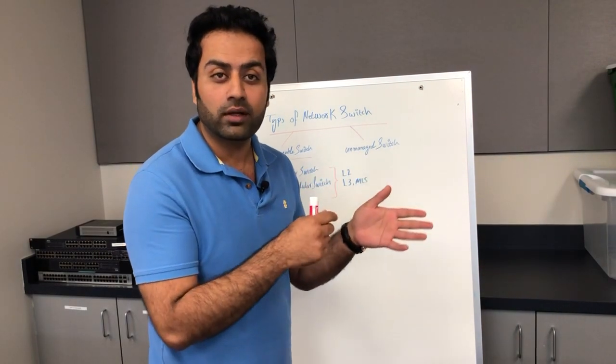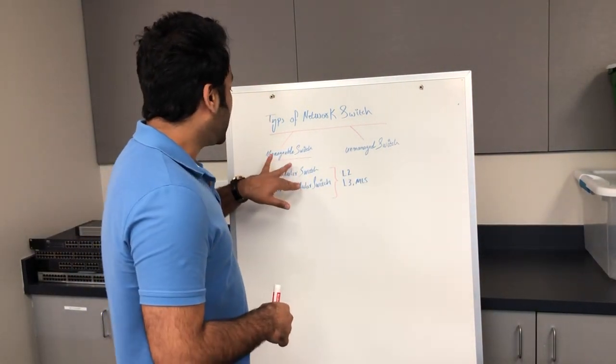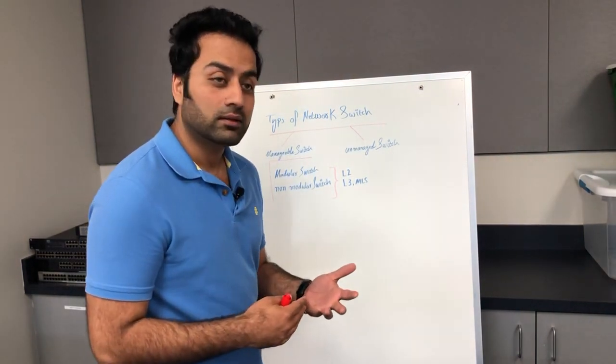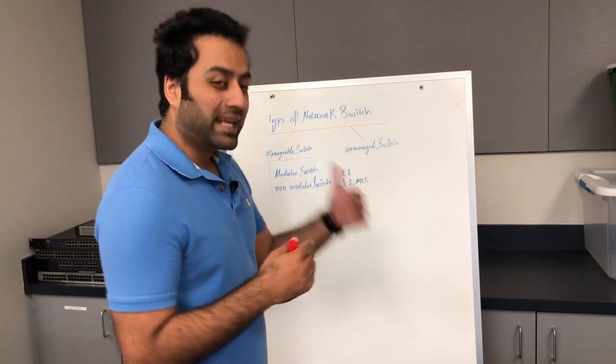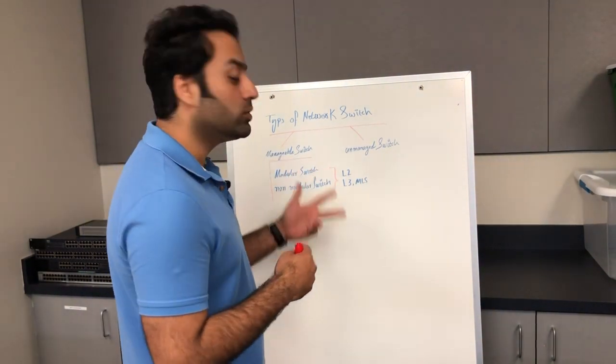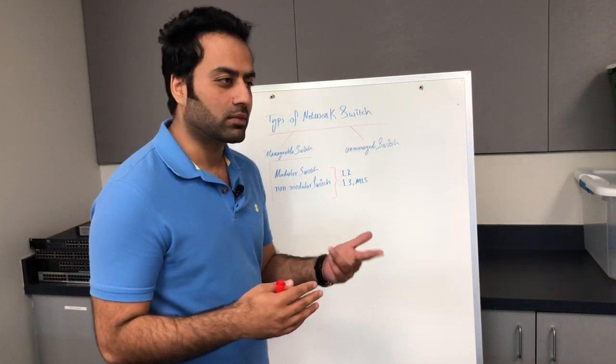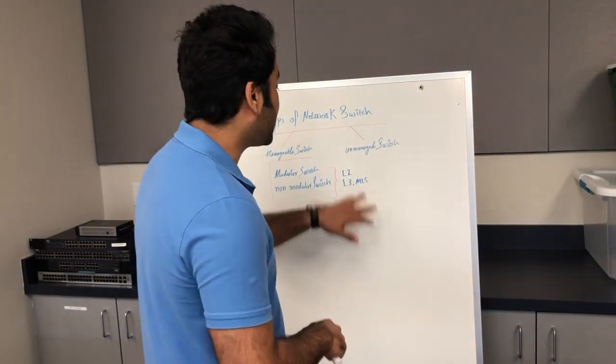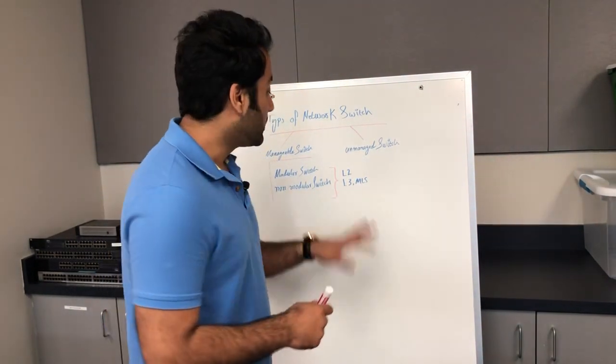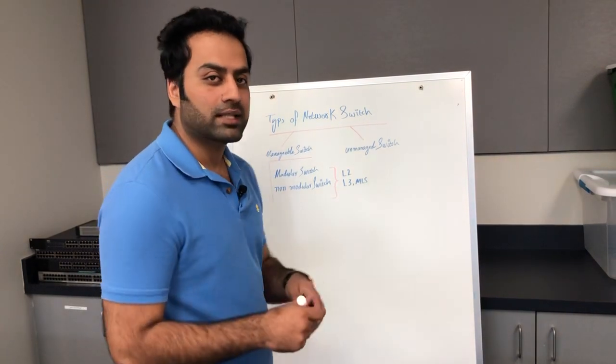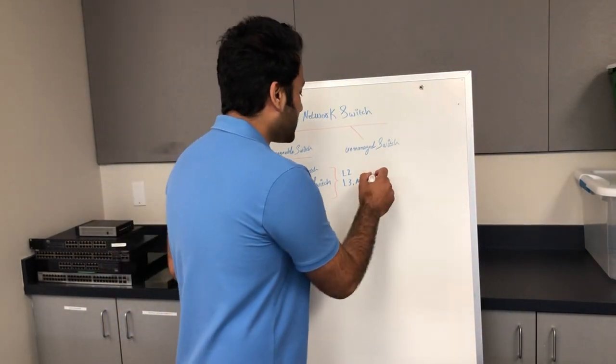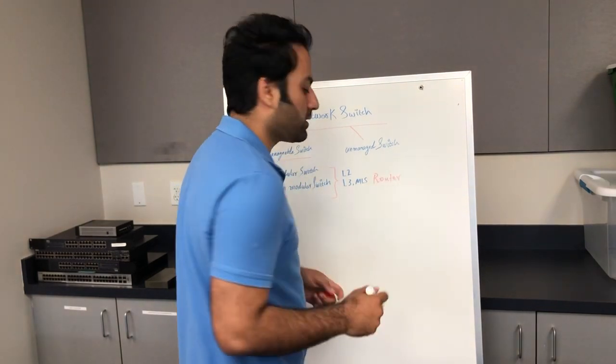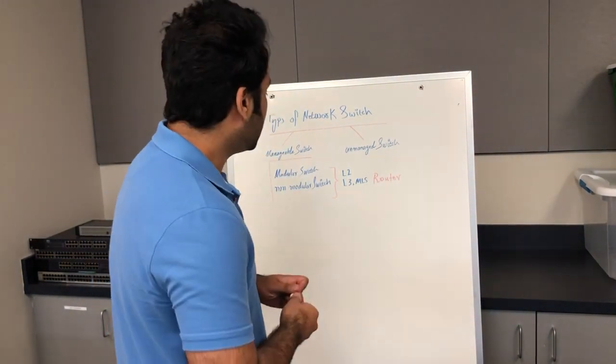In terms of management to manage the switch, we have two layers of switch. For example, MLS is a multi-layer switch which has layer 3 protocol, same as a router, because it has routing protocols.